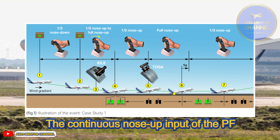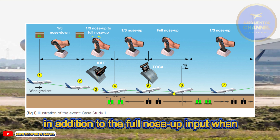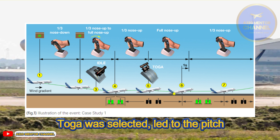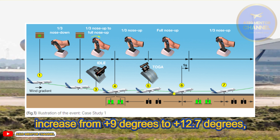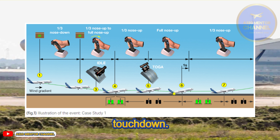The continuous nose-up input of the PF after the first touchdown, in addition to the full nose-up input when TOGA was selected, led to the pitch increase from plus 9 degrees to plus 12.7 degrees, which caused the tail strike on the second touchdown.